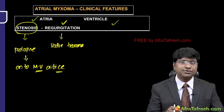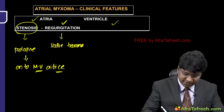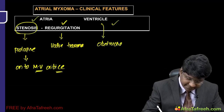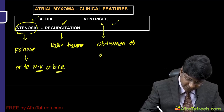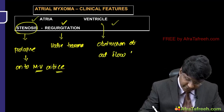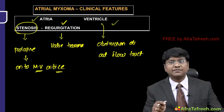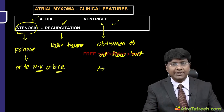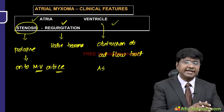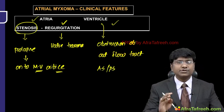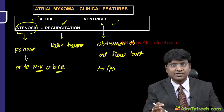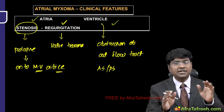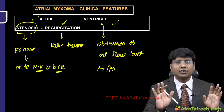Ventricular myxomas (familial tumors present within the ventricles) cause obstruction of the ventricular outflow tract. This gives a picture similar to aortic stenosis or, if on the right side, pulmonary stenosis — sub-aortic stenosis or sub-pulmonic stenosis. Clinical features completely depend upon the location of the tumor.